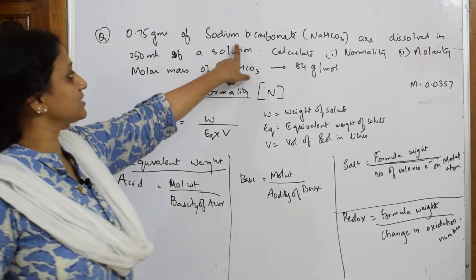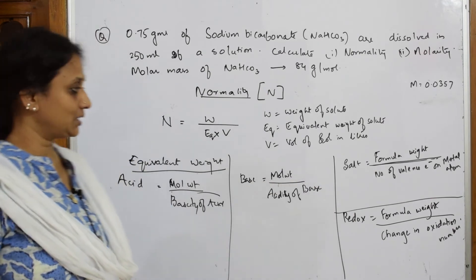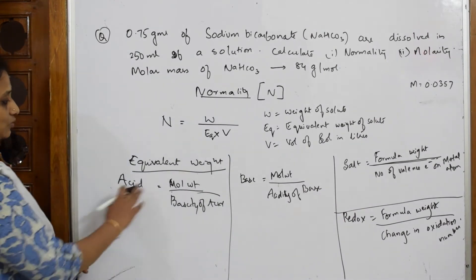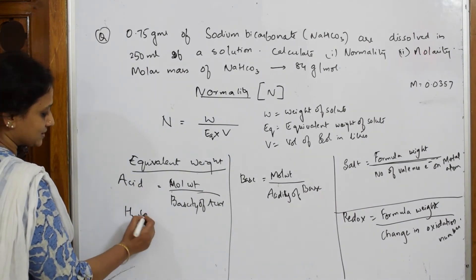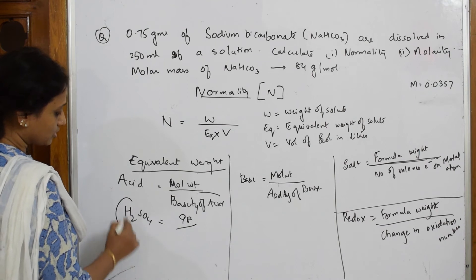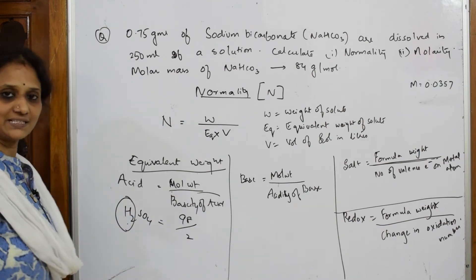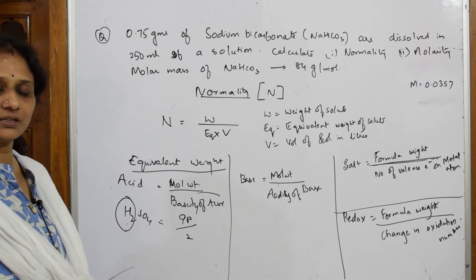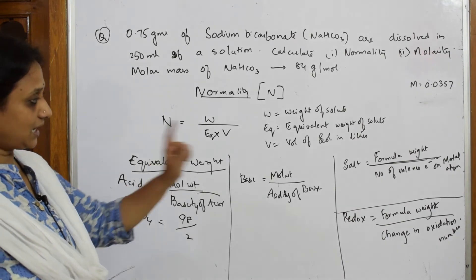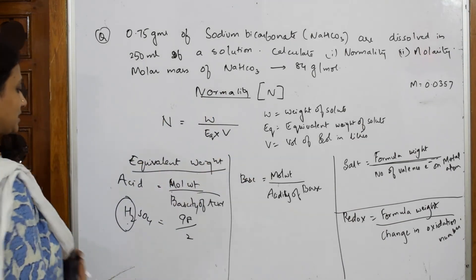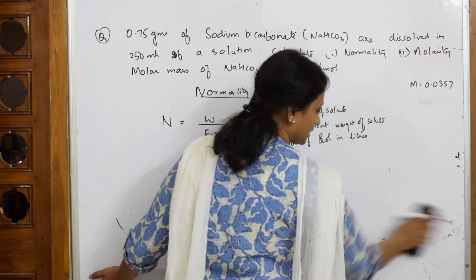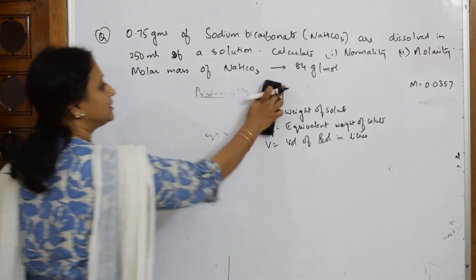In this problem, sodium bicarbonate is given to us — it is a salt, so we will use the salt formula. For context, if we take sulphuric acid (H₂SO₄, molecular mass 98), basicity is the number of protons present, which is 2.